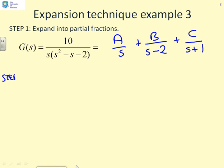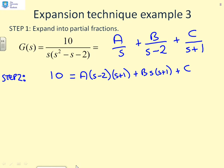And then we do step two, which is to multiply out by the denominator. So I get 10 equals A times s minus 2 times s plus 1 plus B times s times s plus 1 plus C times s times s minus 2.